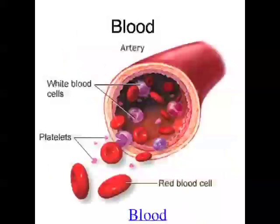Now the blood in mammals actually has three main components. It's got red blood cells, and the job of red blood cells is to carry oxygen around the body — red blood cells have haemoglobin in them, that's what makes them red. Blood's also got white blood cells, and the job of white blood cells is basically to fight disease. And blood's also got platelets, which basically clot the blood. The other thing that makes up blood is plasma, which is pretty much the fluid containing dissolved gases, proteins, hormones, nutrients, and wastes.